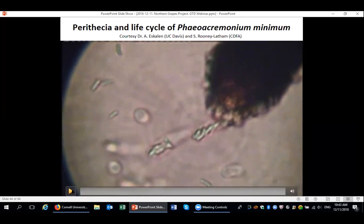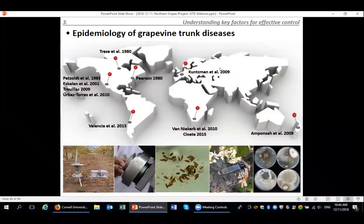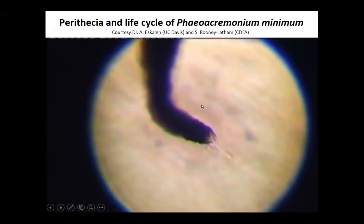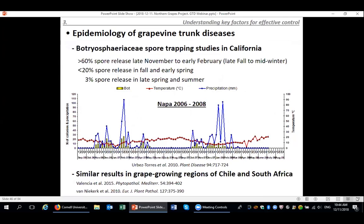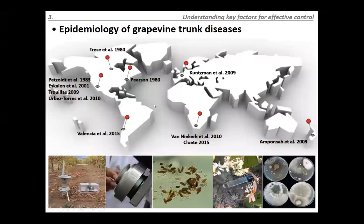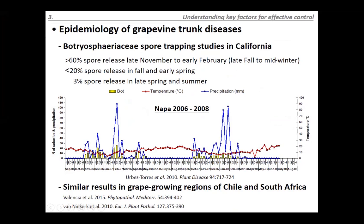Many studies trying to understand epidemiology have been conducted around the world, including in some cool regions. Studies in California between 2006 and 2008 showed that more than 60% of Botryosphaeria spore release occurred from late November through February, with another release in fall or early spring, and essentially no spore release during the dry summer period. Similar results have been observed in regions with similar environmental conditions in Chile and South Africa. This information is used to develop management strategies — in California, late pruning helps diminish infection by avoiding the main winter period of spore release.